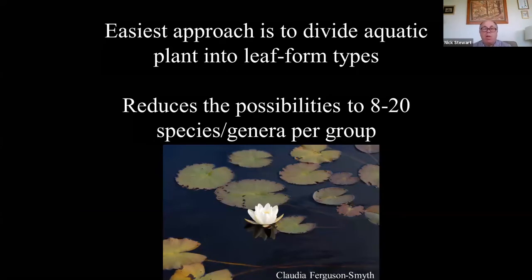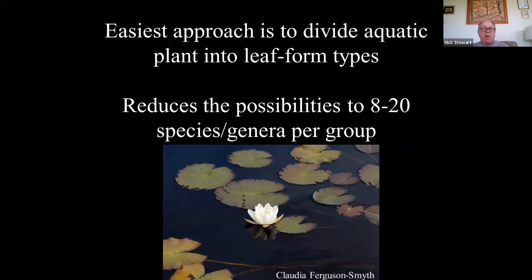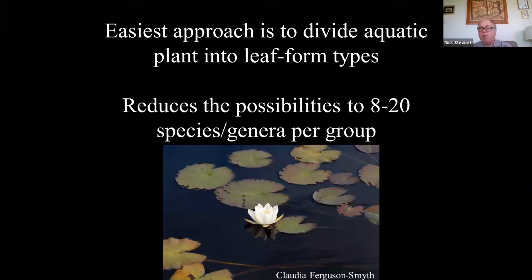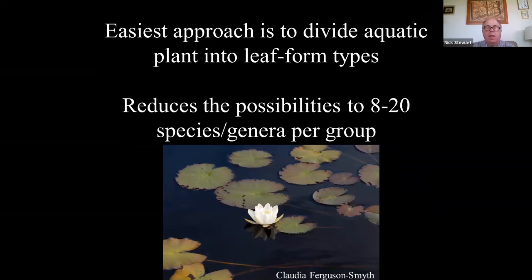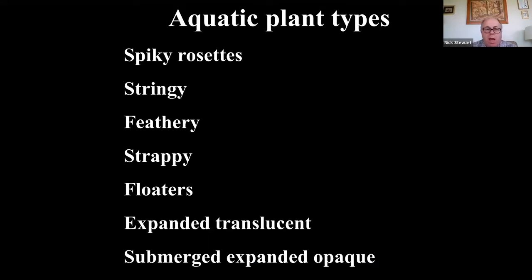Getting on to the main body of the talk — I think the easiest approach is to divide the aquatic plants into seven leaf form types. If you do that, it cuts down the possibilities to about a dozen or so species or genera in each group. That's a good way of cutting down the field of possibilities and you're left with a manageable list where you can say, 'I can see it's not that.' This is the approach I'll be running through in this talk. The seven groups are listed here and I'll give you some examples just to show you what I mean by these different groups.